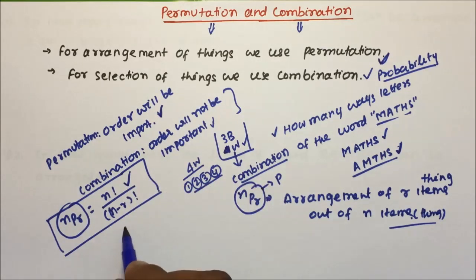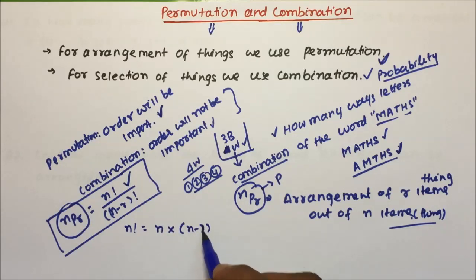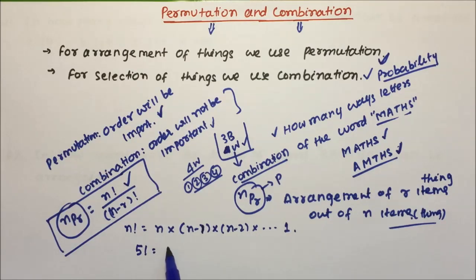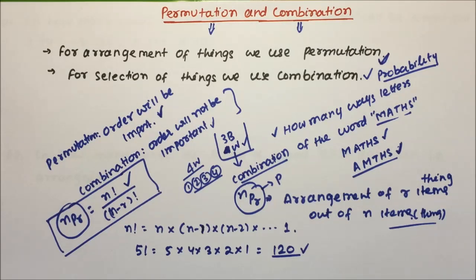N factorial is equal to N into N minus 1 into N minus 2, and you have to continue till 1. So if you have 5 factorial, it will be 5 into 4 into 3 into 2 into 1, which equals 120. So 5 factorial equals 120. This is how we deal with factorials.